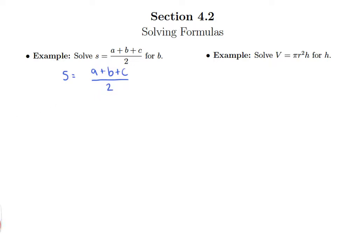We can get rid of that 2 that we're dividing by by simply multiplying both sides of the equation by 2, and I'm going to show it as 2 over 1 on the right side. That allows 2's to cancel on the right. And so what that ends up giving us is 2s on the left equals a plus b plus c on the right.